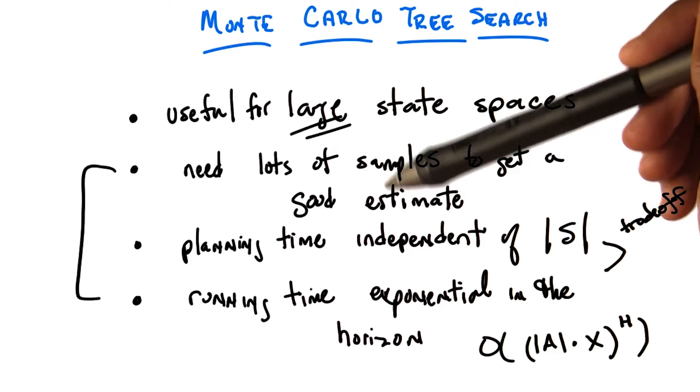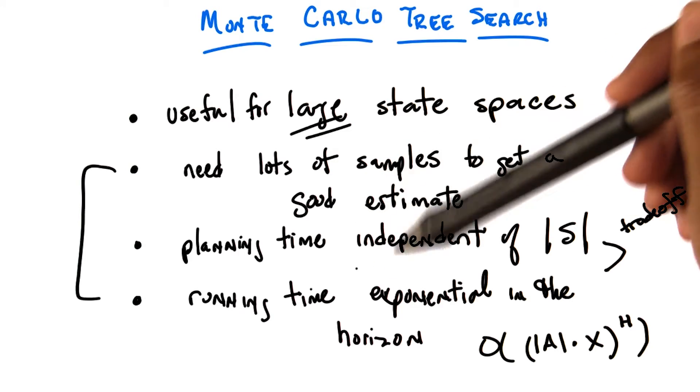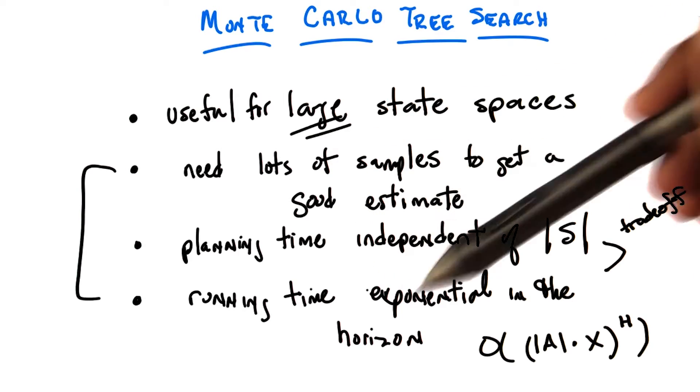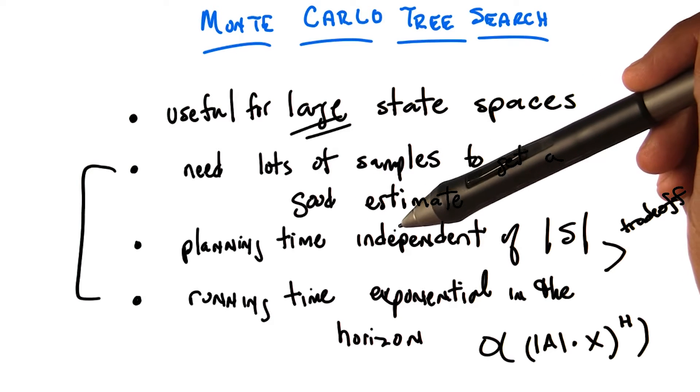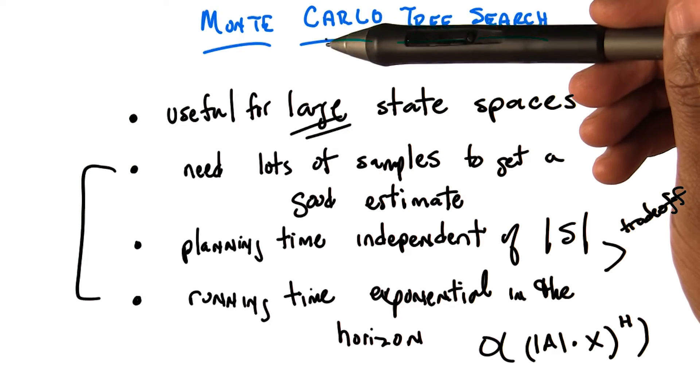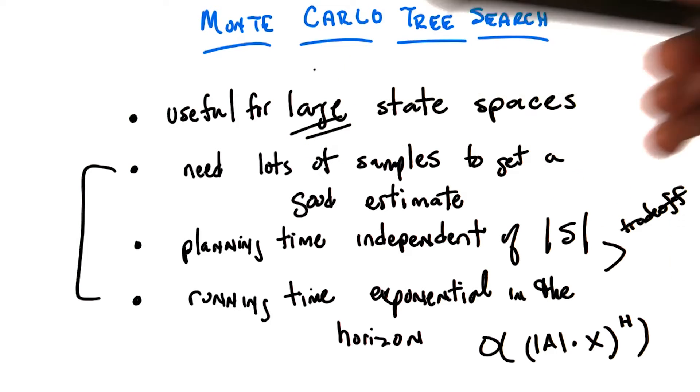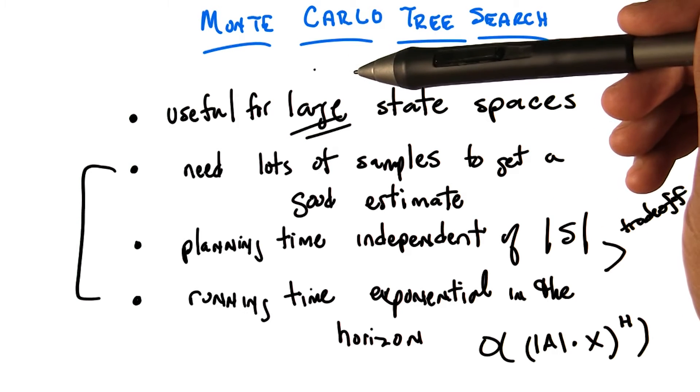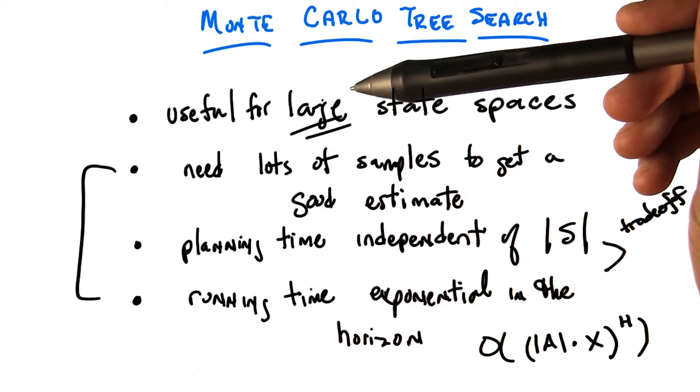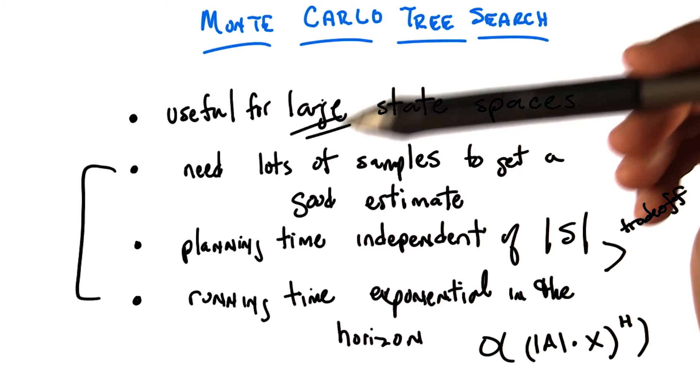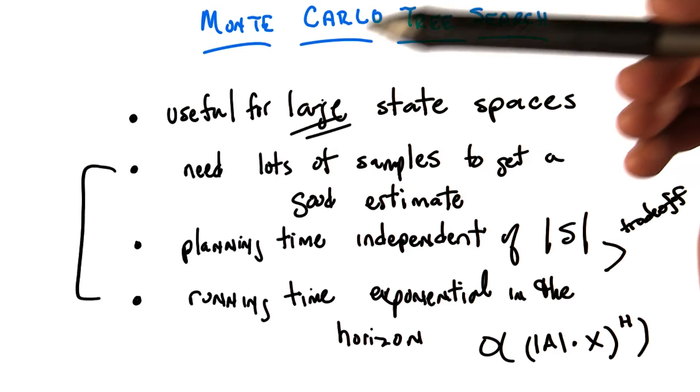So before, with the kind of algorithms that we've used before, you visit all the states, you back up information about them, and so on and so forth. So that clearly has to depend upon the number of states. Here, we're not worrying about the states. What we're doing is we're just looking forward into the future by doing simulation. And so every single time we have to look forward into the future, we have to look forward into the future. And perhaps we have to look forward very far into the future.